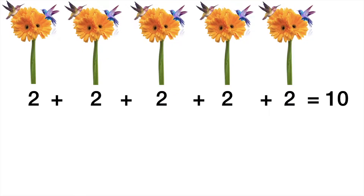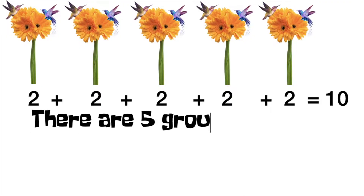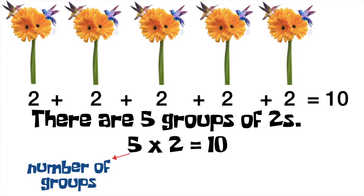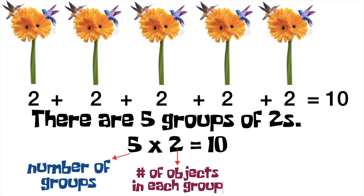Since there are five groups of twos, we can simply write them as 5 times 2 is equal to 10, wherein 5 is the number of groups, while 2 is the number of objects in each group, and 10 is what you call the product, which is the total number of objects.